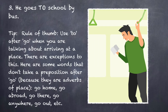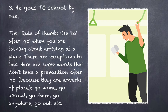Sentence number three: He goes to school by bus. The rule of thumb here is, unlike in Chinese, we use the preposition 'to' after 'go' when you are talking about arriving at a place — I want to go to a movie, let's go to the store. There are some exceptions: some words don't take a preposition after 'go' because they are adverbs of place — for example, go home, go abroad, go there, go anywhere, go out. There's a list of these, so it's good to know them.